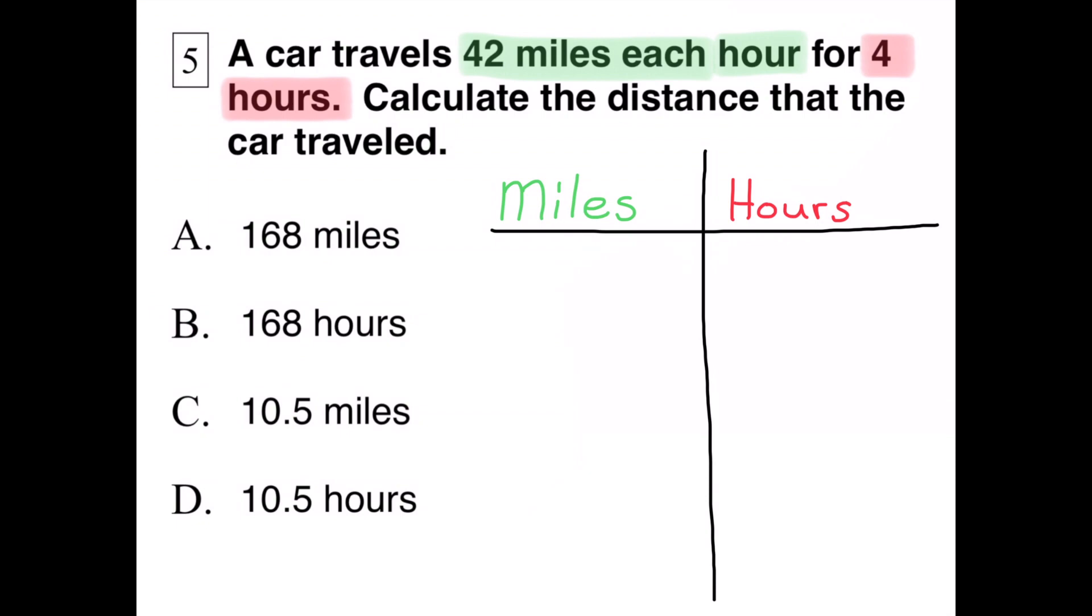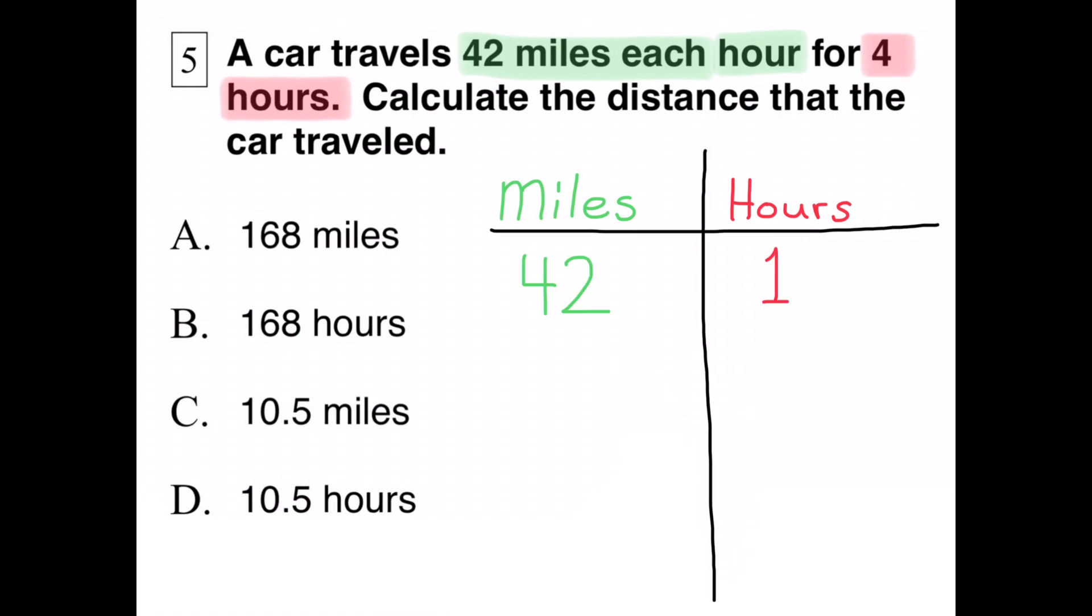I'm making a table with miles on the left column and hours in the right column. The information tells us that the car travels 42 miles each hour, so I put 42 miles in the left column and one hour in the right-hand column.